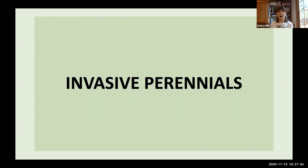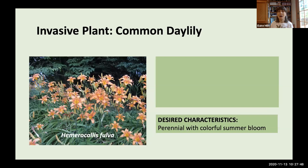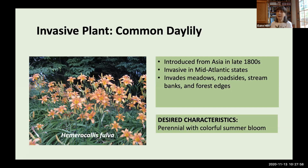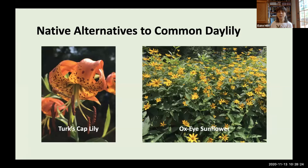We'll now look at some invasive perennials. The first is Common Daylily, introduced from Asia in the late 1800s, now invasive through many Mid-Atlantic states. It invades meadows, roadsides, stream banks, and forest edges, multiplying by seeds and roots to form dense patches. It's challenging to remove because of the little tubers that linger underground. For a perennial with colorful summer bloom, I suggest Turk's Cap Lily and Ox Eye Sunflower.